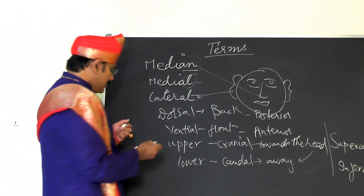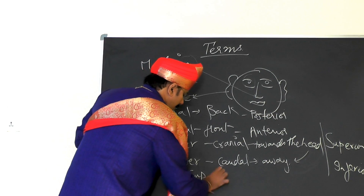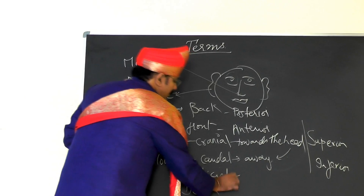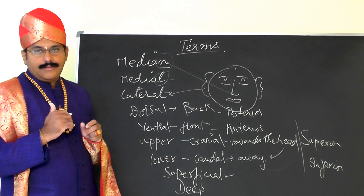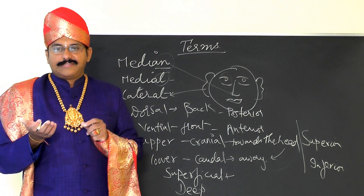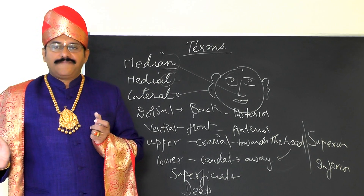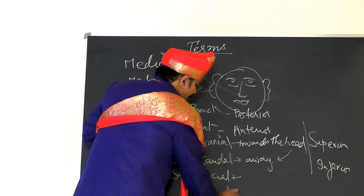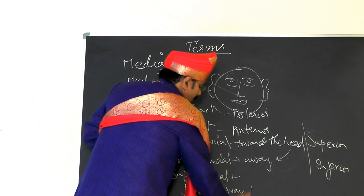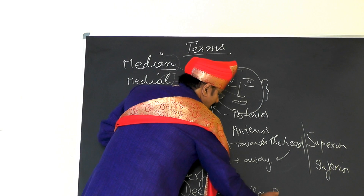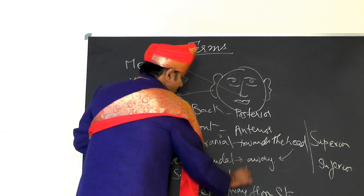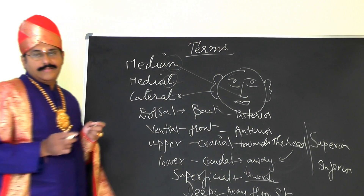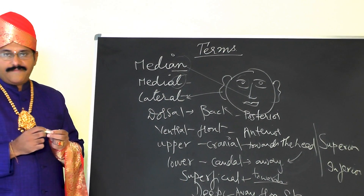We are going to learn two more terms: superficial and deep. Superficial means towards the skin or towards the surface. Deep means away from the surface or away from the skin. So whatever is towards the skin is superficial, and whatever is away from the skin is deep.